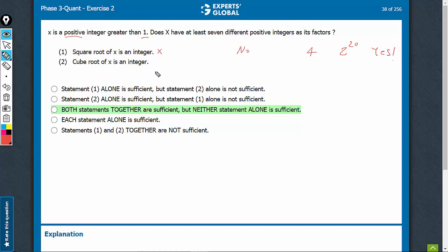Look at statement 2: cube root of x is an integer. So, if x is 2 raised to power 3, the answer would be no. If x is 2 raised to power 30, the answer would be yes. 2 raised to power 3 will have only four factors. 2 raised to power 30 will have 31 factors.